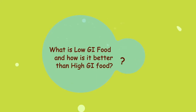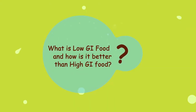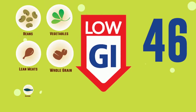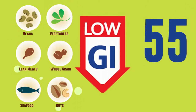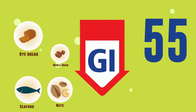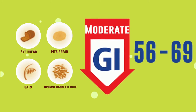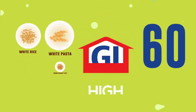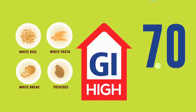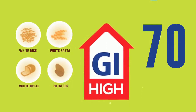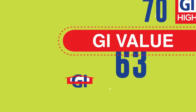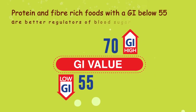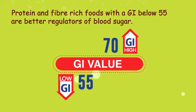What is low GI food and how is it better than high GI food? Foods with a GI below 55 are considered low GI foods. Those that range from 56 to 69 are considered moderate, and foods with a GI above 70 are considered high GI foods. Protein and fiber-rich foods with a GI below 55 are better regulators of blood sugar.